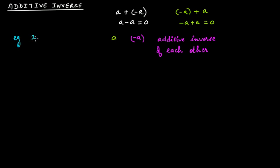For example, we have the integer two. What can we add to this integer to make zero? If we add minus two, then this will become zero. Therefore, two and minus two are additive inverse of each other.